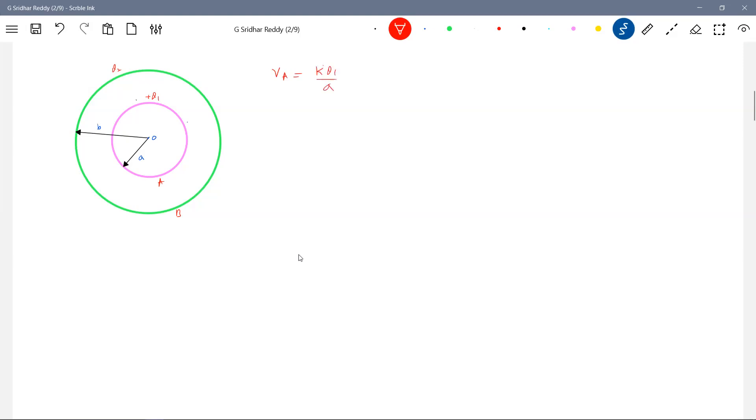So KQ1 by A. Then assume that shell A is not there. Only shell B is there. Charge Q2 and shell B is there. Then where is the point? The point lies outside shell A, so here inside shell B. What is the potential here? Potential on the surface of shell B, KQ2 by B. Trying to follow.